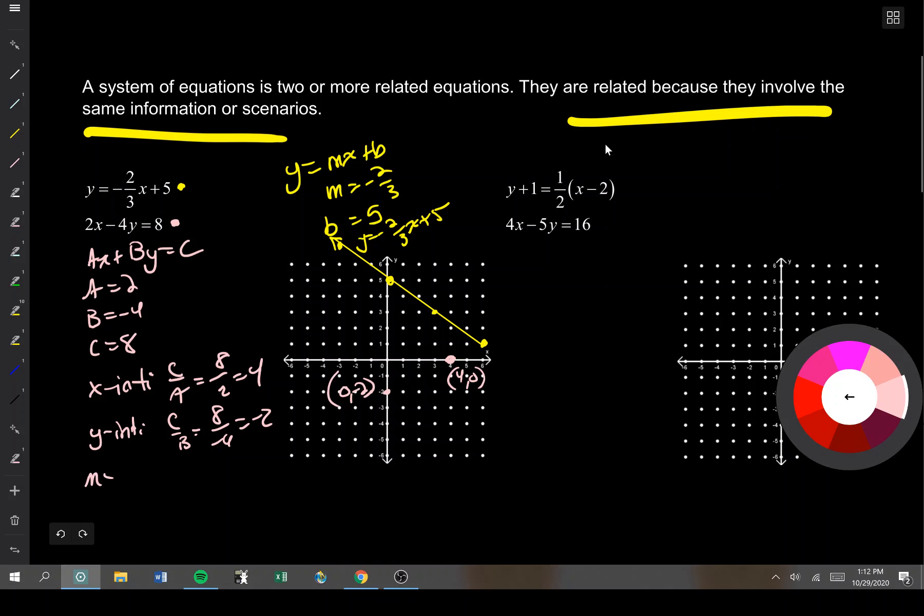If I want to find the slope, that's negative a over b, which is negative 2 over negative 4, which is a positive half. So I'm going up 1, right 2, up 1, right 2, up 1, right 2. I put down dots that go across the whole entire plane. You should do the same.